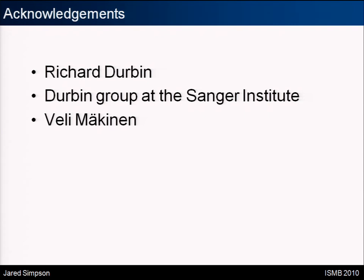Question: How does error correction deal with diploid genomes where you can expect some level of polymorphism? Answer: Right now, if we see the same nucleotide variant some number of times — say three times — we'll say this is probably a polymorphism and not correct it. But we hope to do something more robust — actually using quality values and a more holistic probabilistic framework for error correction.